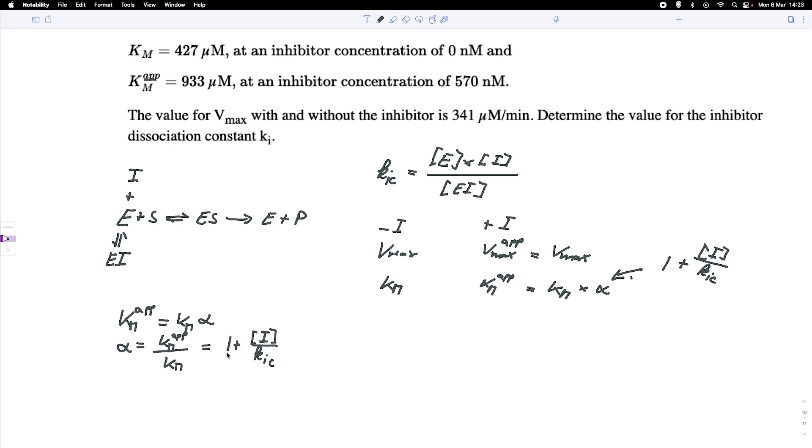So I bring the 1 to the other side. I have with that KM up over KM minus 1, because the 1 to the other side, equals the inhibitor concentration divided by KIC.